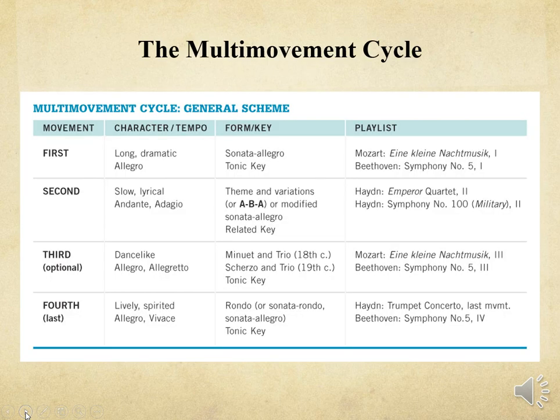The multi-movement cycle of the classical era was the form employed for many of the most important musical works, including symphonies, sonatas, string quartets, concertos, and other types of chamber music. The first movement would be long and dramatic, with the tempo allegro, in sonata allegro form, and in the tonic key.